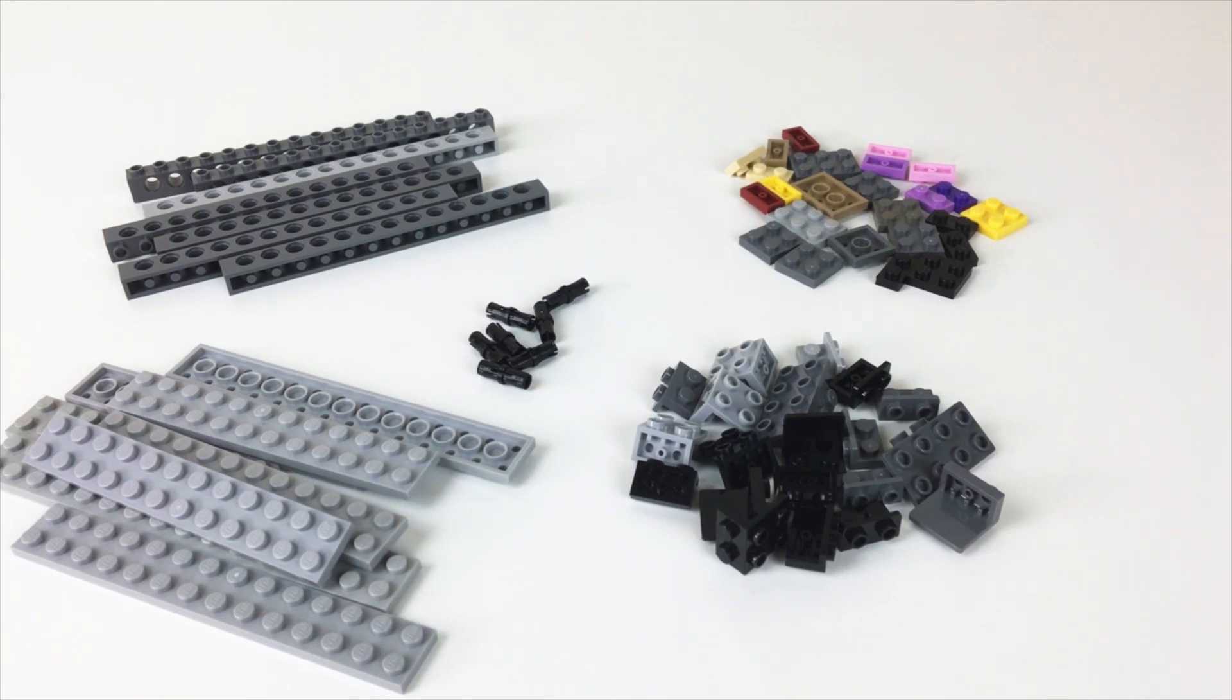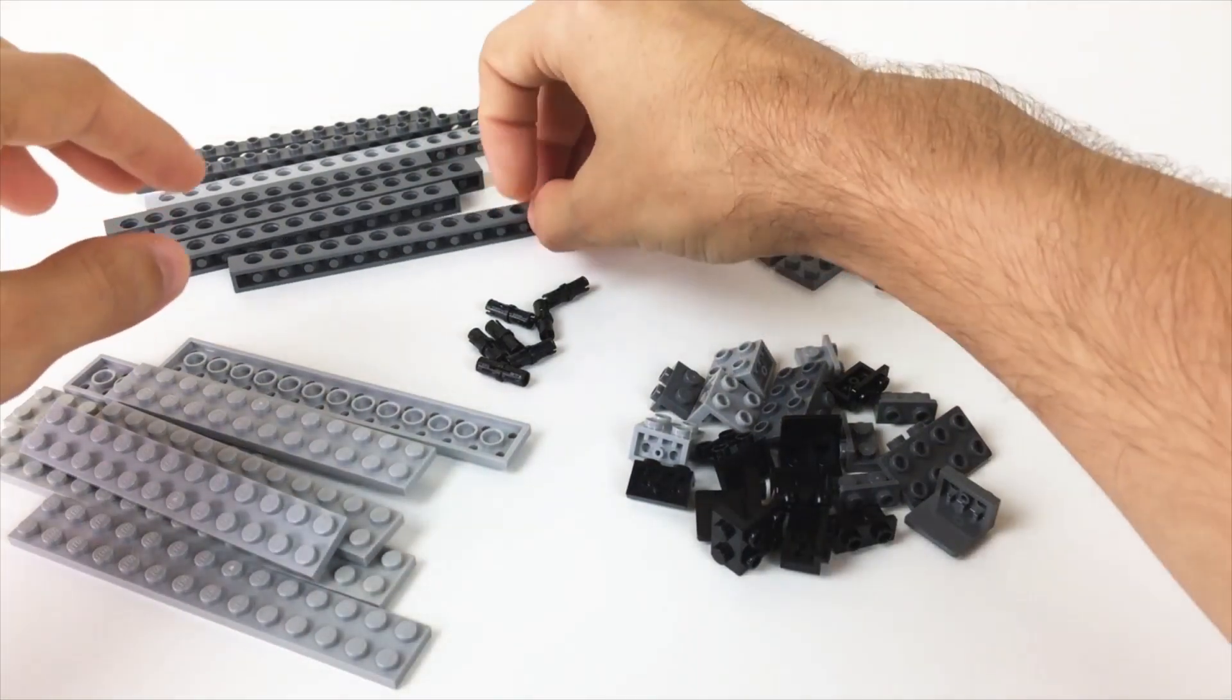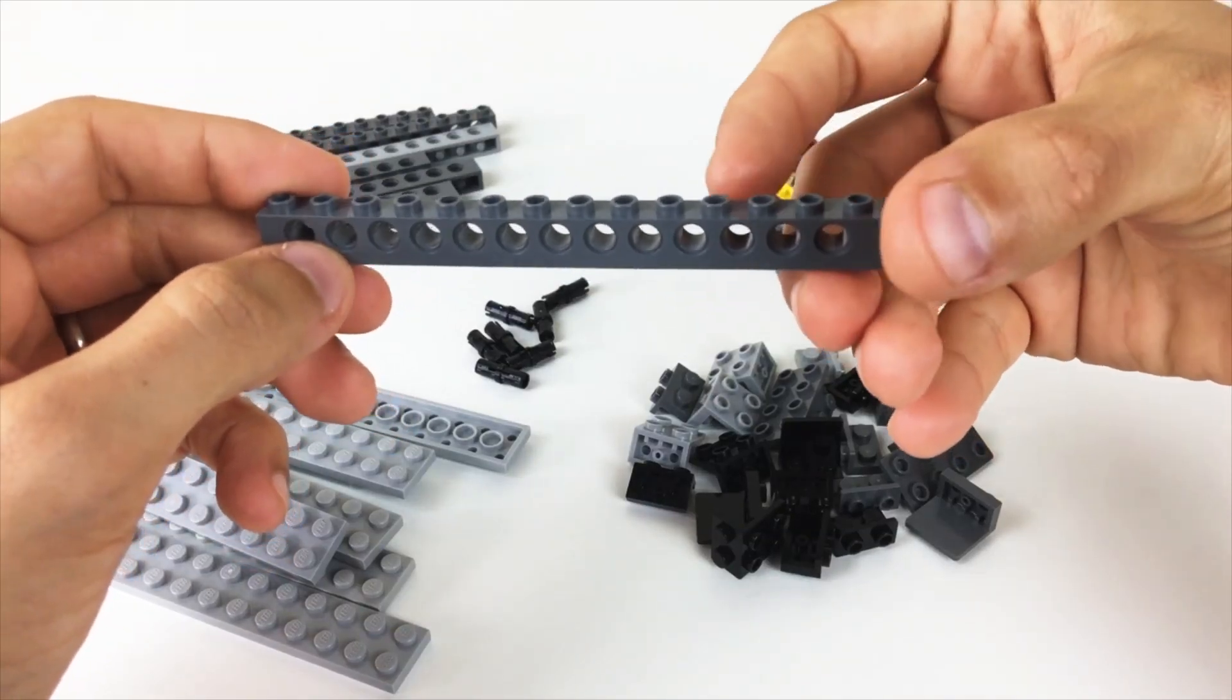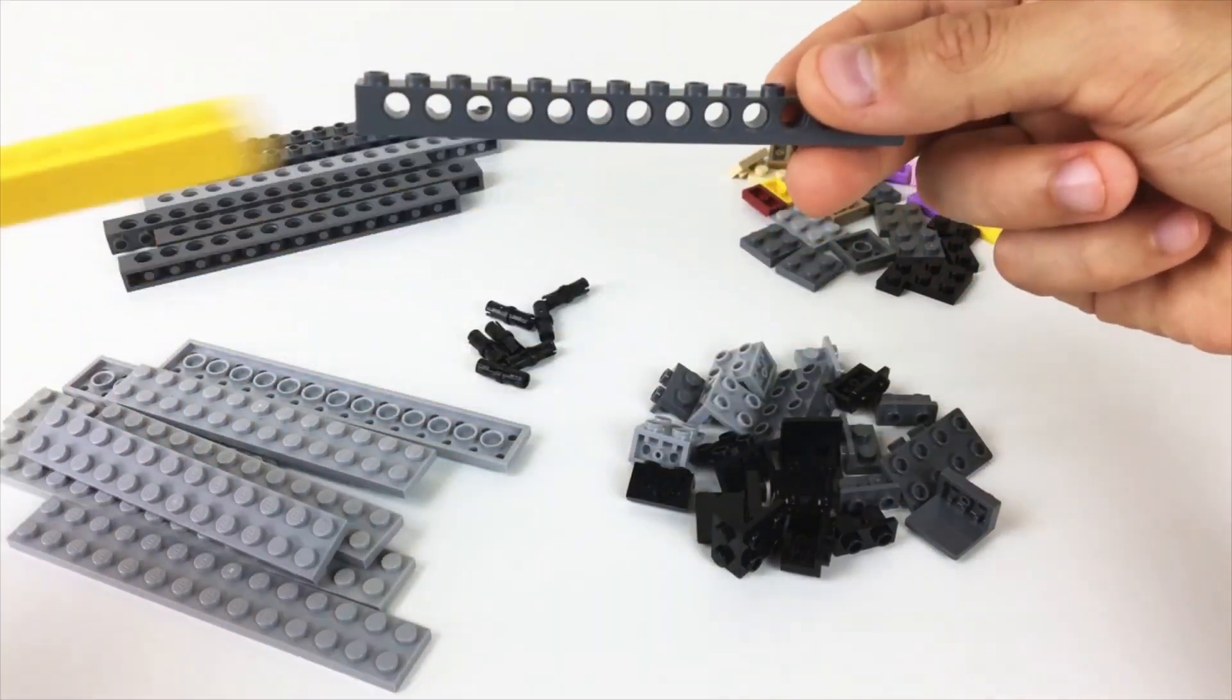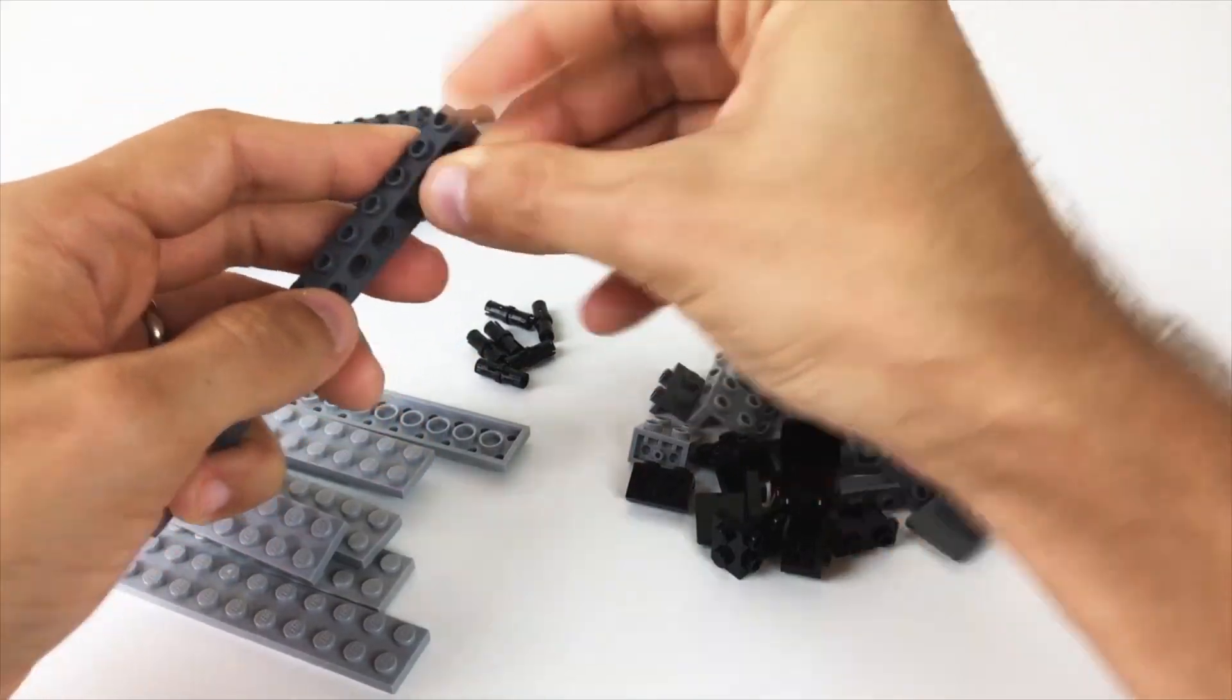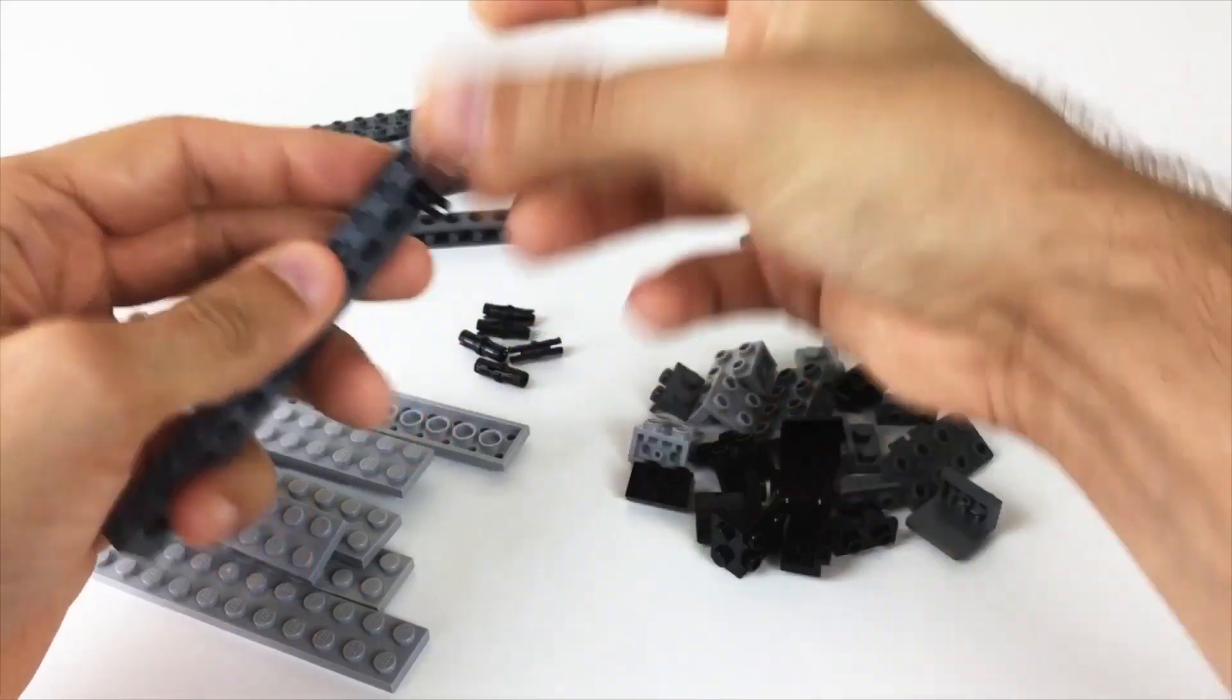The first thing that I would start with if I wanted to create something like that is these Technic beams or Technic bricks. The reason that they're super handy versus your regular Lego bricks is the fact that they have these handy dandy holes in them. So what makes that useful is that when you plug in a Technic pin or two, you're able to create something that can be extended without any major loss of strength at the connection point.